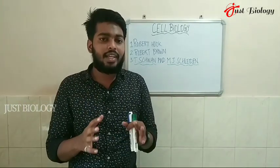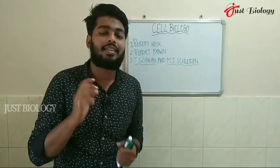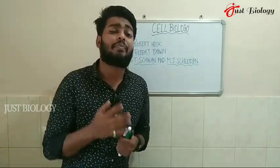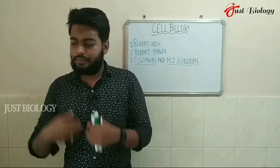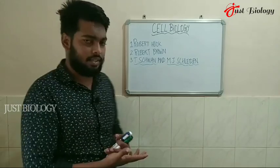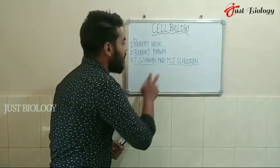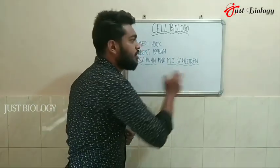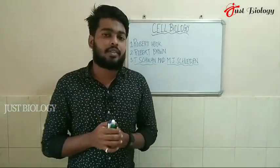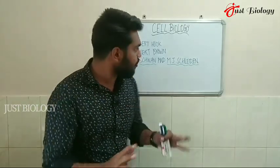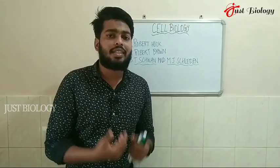Schwann and Schleiden's contribution to cell biology was formulating the cell theory — the idea that cells arise from pre-existing cells. Schleiden was a botanist and Schwann was a zoologist. They made their research individually and then combined their findings to formulate cell theory. This covers the basic history and introduction to cell biology.